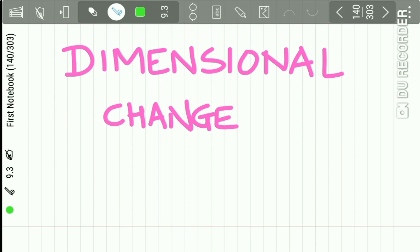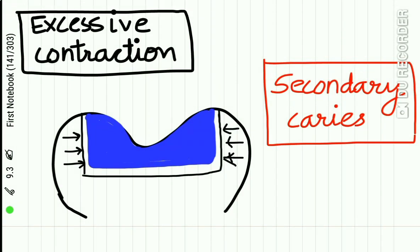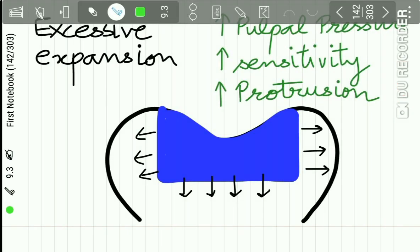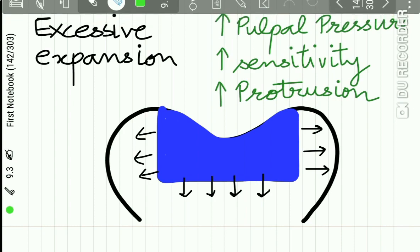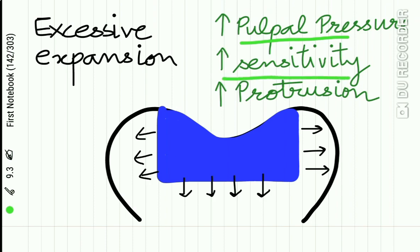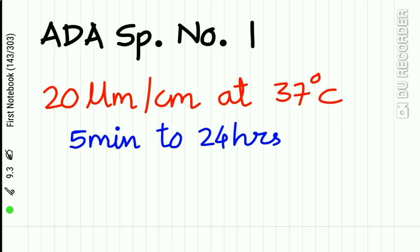The second property is dimensional change. Ideally the dimensional change in any restoration should be very minimal. Excessive contraction may result in a small gap between the restoration and the tooth, causing secondary caries. Excessive expansion may result in increased pulpal pressure, increased sensitivity, and protrusion of the restoration from the prepared cavity. According to ADA specification number one, the dimensional change — either expansion or contraction — should not be more than 20 micrometers at 37°C, measured 5 minutes to 24 hours after insertion.